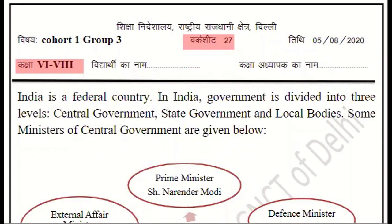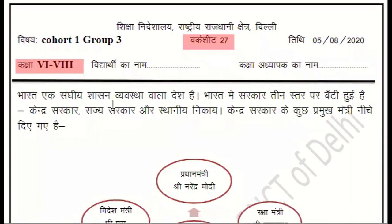First we will see it in Hindi. India is a country of Sanghiye Sashan, which is a federal government, where there are various layers including State government, Central government, local bodies, Panchayat, and Gram Panchayat. This kind of governance is called Sanghiye Sashan.